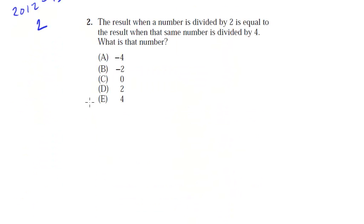The result when a number is divided by 2 is equal to the result when that same number is divided by 4. What is that number? We could, in theory, plug in the answers. So negative 4 divided by 2, well that's negative 2, and negative 4 divided by 4 is negative 1, so that doesn't work. Let's do the equation, because that's what this video is about. So the result when a number is divided by 2, so n divided by 2, is equal to the result when that same number is divided by 4, n divided by 4.